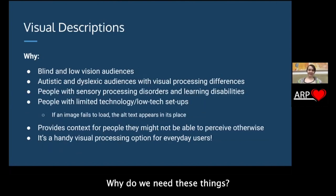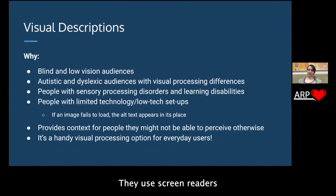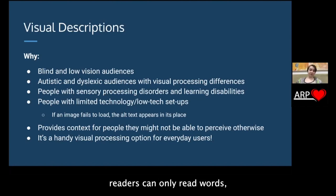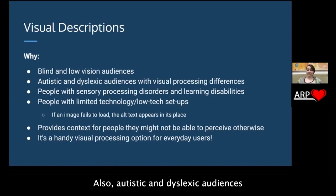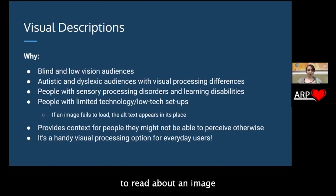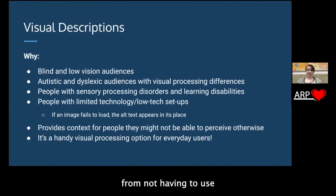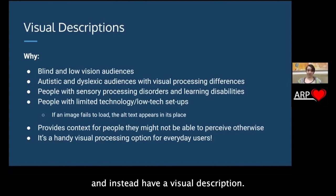Why do we need these things? Blind and low vision audiences need visual descriptions. They use screen readers to access visual content and screen readers can only read words — so that is how they know what your images are. Also, autistic and dyslexic audiences with visual processing differences might benefit from having the option to read about an image. People with sensory processing disorders and learning disabilities might benefit from not having to use their eyes on certain images and instead have a visual description.